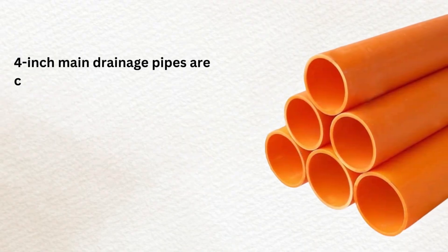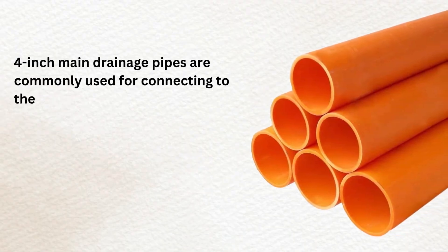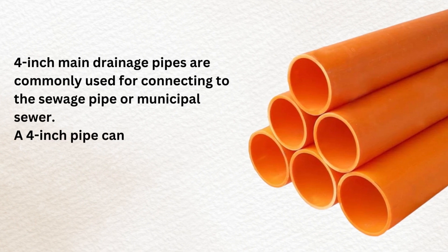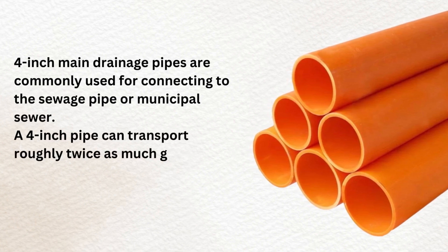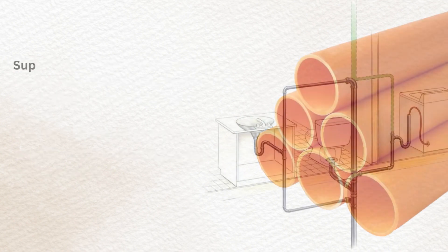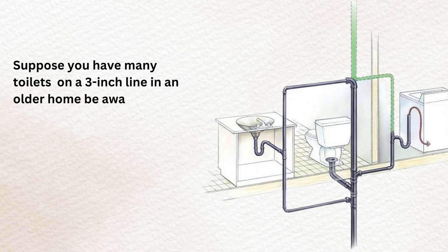4-inch main drainage pipes are commonly used for connecting to the sewage pipe or municipal sewer. A 4-inch pipe can transport roughly twice as much garbage as a 3-inch pipe. If you have many toilets on a 3-inch line in an older home, be aware that clogs are more common.